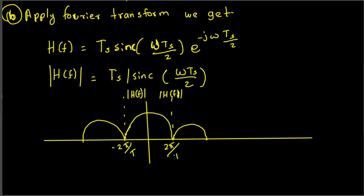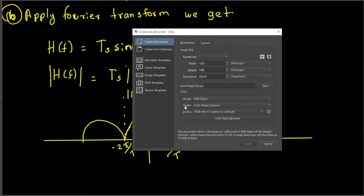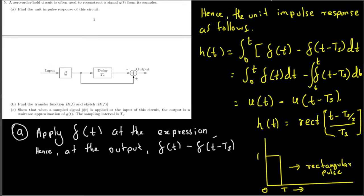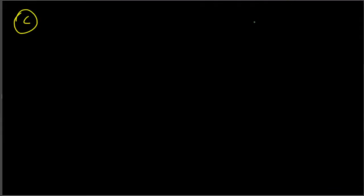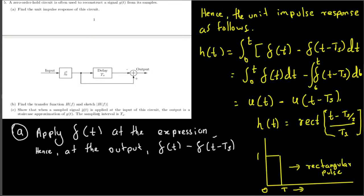That is the answer for Part B. For Part C, the question asks us to show that when a sampled signal g̃(t) is applied at the input of the circuit, the output is a staircase approximation of g(t) with sampling interval T_s.